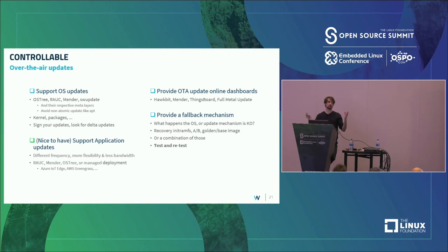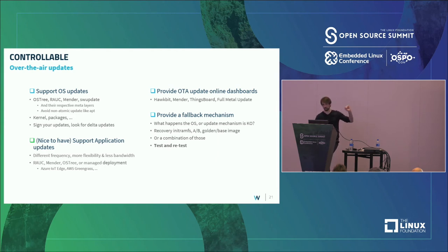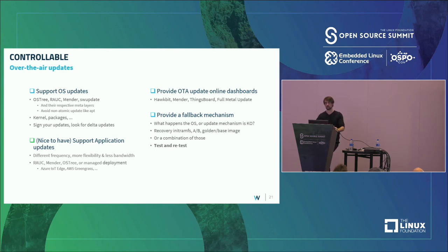Separating app and OS updates limits the bandwidth you use. If you're using Azure IoT Edge or Greengrass to deploy containers, most of that is taken care of for you. Having a dashboard for that, being able to target specific devices to deploy to, and having a fallback mechanism are all important — you always want a fallback in case something goes wrong.